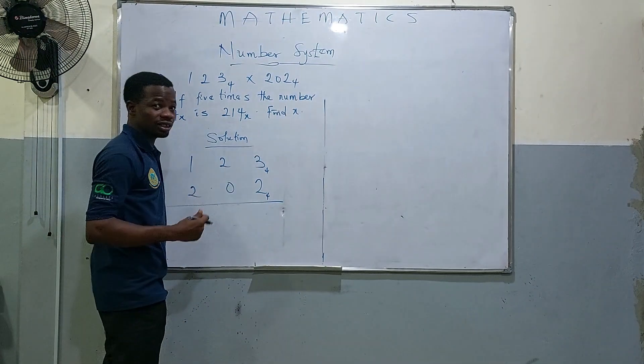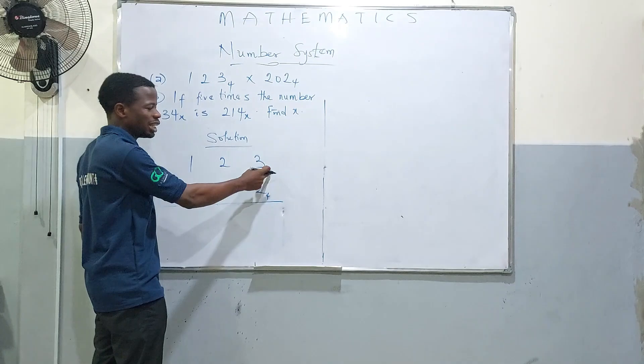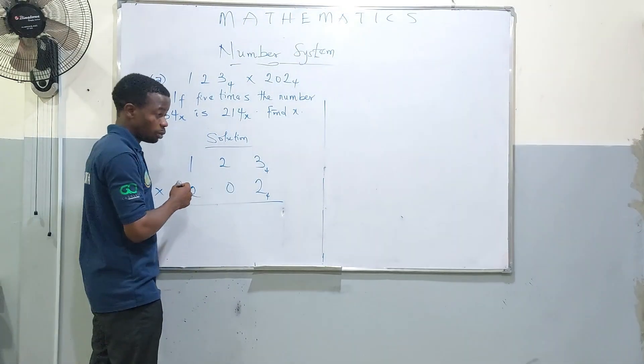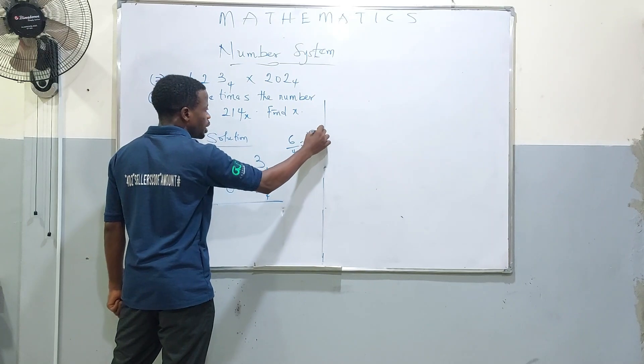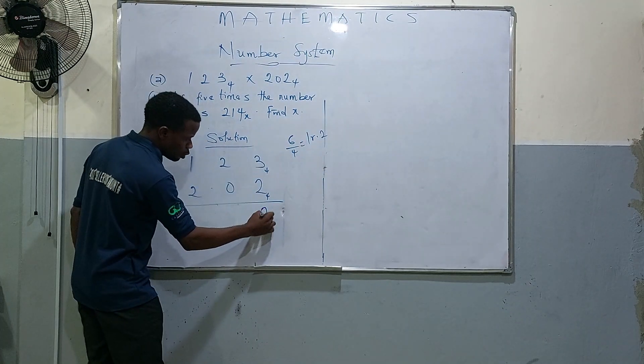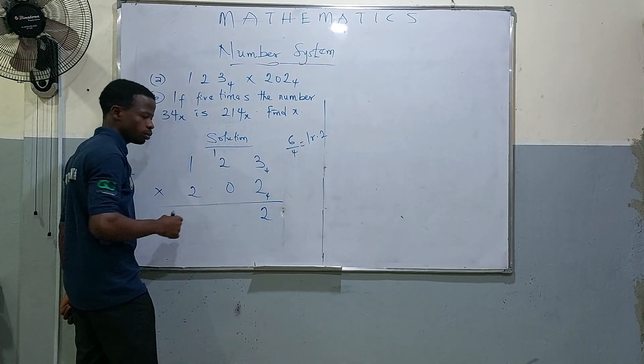2 times 3 is 6. 6 is more than base 4, right? It's more than 4. So you have to do 6 divided by 4: 1 remainder 2. You write the remainder 2. This one you can do.